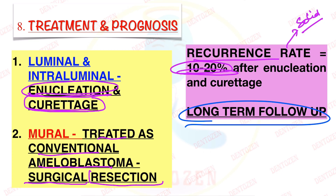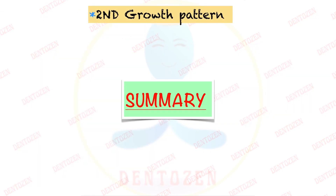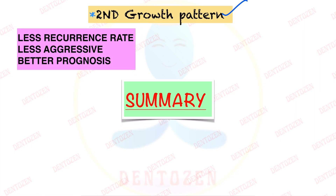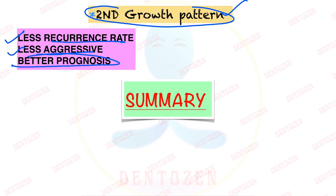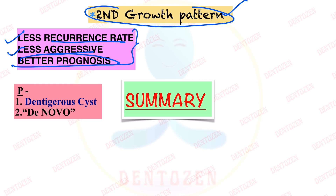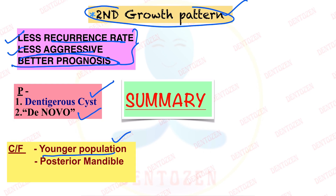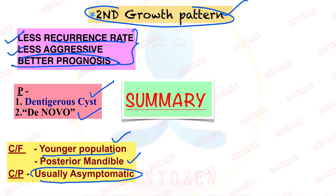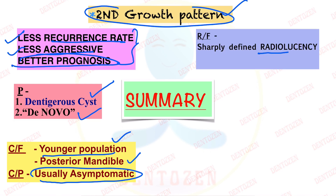Let's quickly summarize the main points. Unicystic Ameloblastoma is the second growth pattern of Ameloblastomas — the first is the solid conventional or multicystic type, and the third is the peripheral type. It is different from the solid type because it has less recurrence, is less aggressive, and has better prognosis. Regarding pathogenesis, it can arise from a dentigerous cyst or de novo. It is seen in a younger population, with the posterior mandible being the most common site. Clinically it presents as an asymptomatic lesion, and radiographically as a sharply defined radiolucency resembling a dentigerous cyst due to its association with an unerupted tooth.